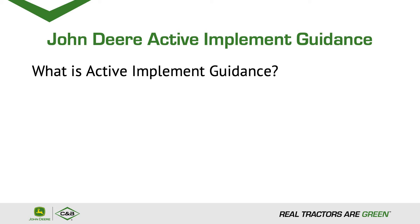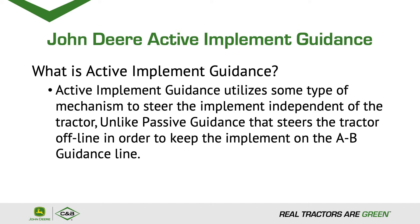What is Active Implement Guidance? Active Implement Guidance utilizes some type of mechanism to steer the implement independent of the tractor, unlike passive guidance that steers the tractor offline in order to keep the implement on the AB guidance line.